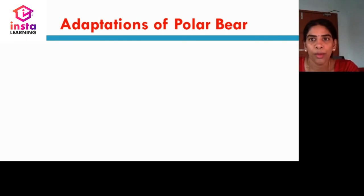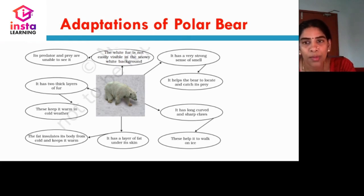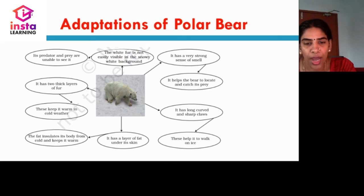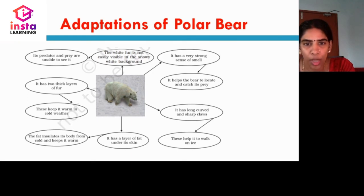Let us see what adaptations the polar bear undergoes. Polar bears have white fur which is not easily visible against the snowy background, so predators and prey are unable to see them. They have a strong sense of smell so they can locate and catch prey. They have long, curved and sharp claws so they can walk on ice easily. They have a layer of fat under their skin for insulation, keeping their body warm. They also have two thick layers of fur to keep warm in cold weather.